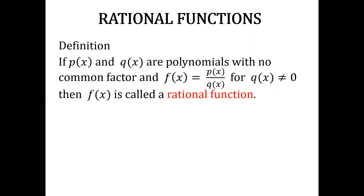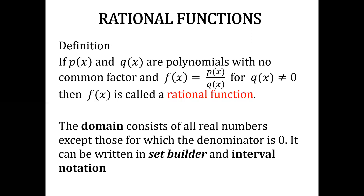A rational function is a quotient of two polynomials with no common factor. The domain consists of all real numbers except those for which the denominator is zero. It can be written in set-builder and interval notation.